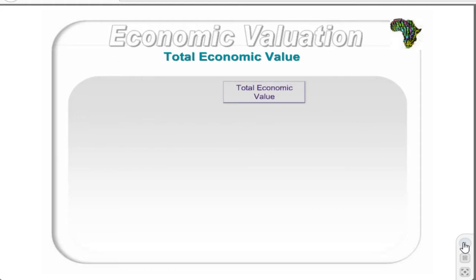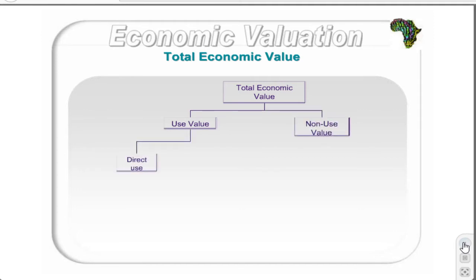Total economic value of a good or service shows the extent to which individuals would sacrifice other goods or services to acquire a quantity of this good or service, and is comprised of use and non-use values. Use values consist of direct use, indirect use, and option use. However, option use is not considered a true use value. Direct use values are those values that derive from the actual use of an environmental good or service. They can be consumptive — in other words, they can be consumed and will not be available for use by anyone else.